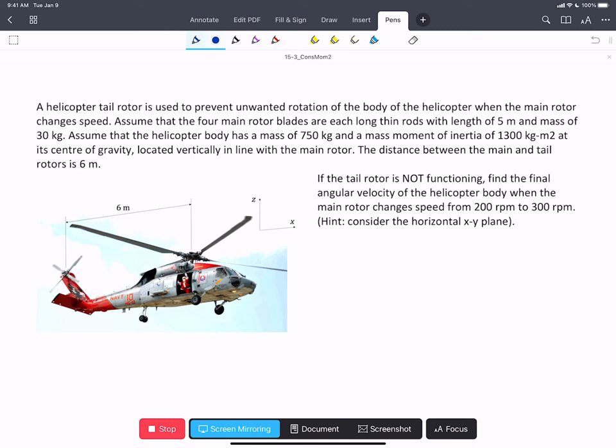In this problem, we're presented with a helicopter whose tail rotor is not functioning. If we change the angular speed of the blades from 200 to 300 RPM, what will be the final angular velocity of the body?